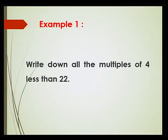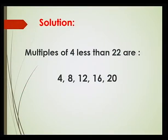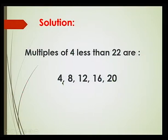Let us consider the first example: Write down all the multiples of 4 less than 22. So I have to find all the multiples of 4 which are less than 22. So 1 times 4 is 4, 2 times 4 is 8, and so on, until I get the last multiple of 4 less than 22. The multiples are 4, 8, 12, 16 and 20.